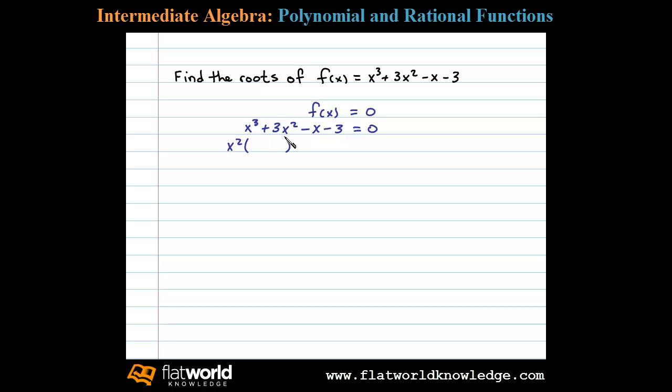Factoring out x², we have x²(x + 3). Now the GCF of the second two terms is 1, but since the leading coefficient is negative we'll factor out a negative 1, which leaves us with x + 3.